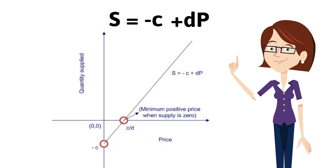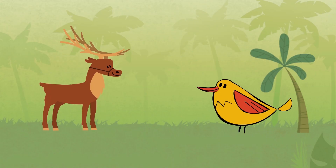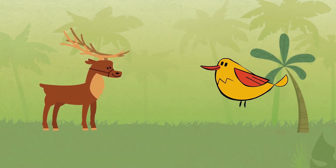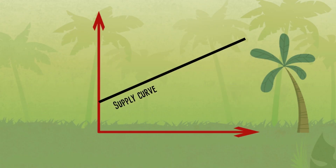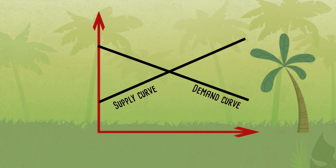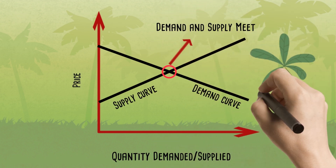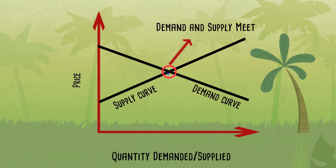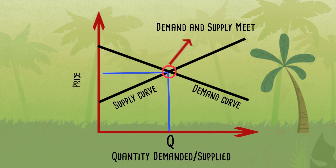When demand and supply meet each other, they talk about price and how price adjusted to the situation, giving both demand and supply the opportunity to meet and live a happy life.